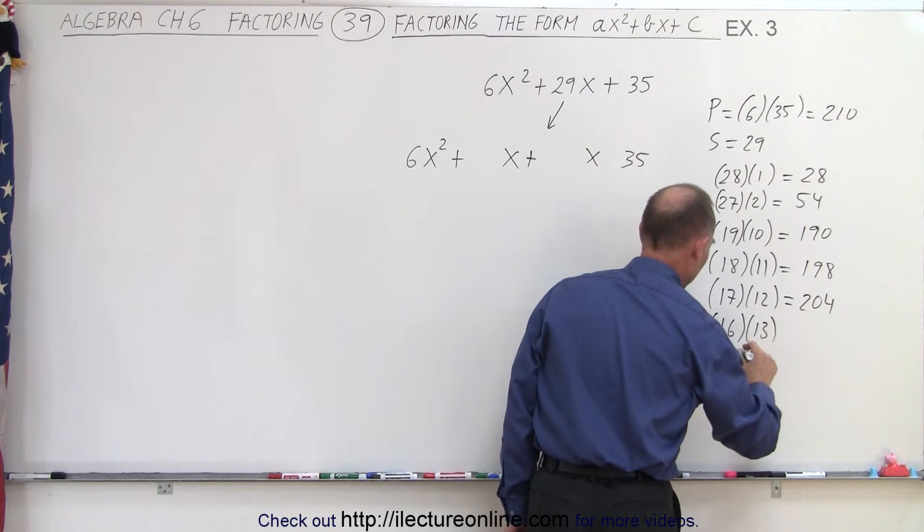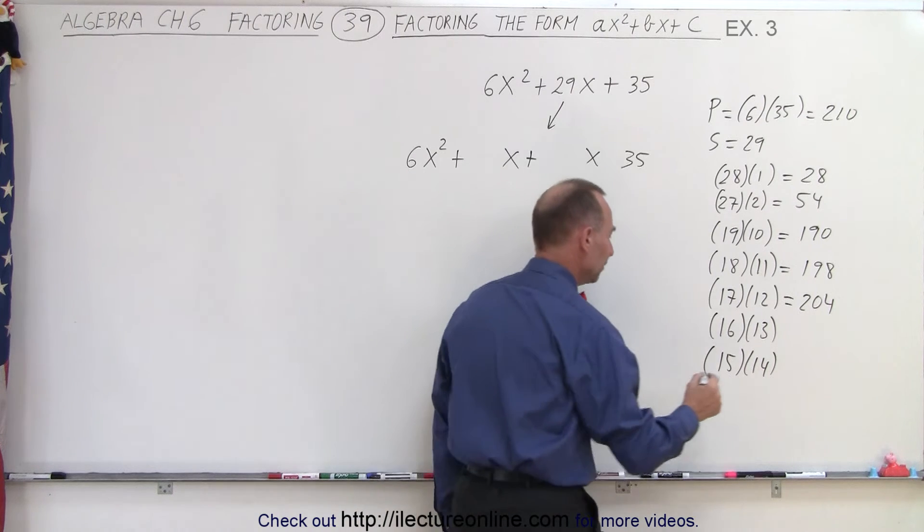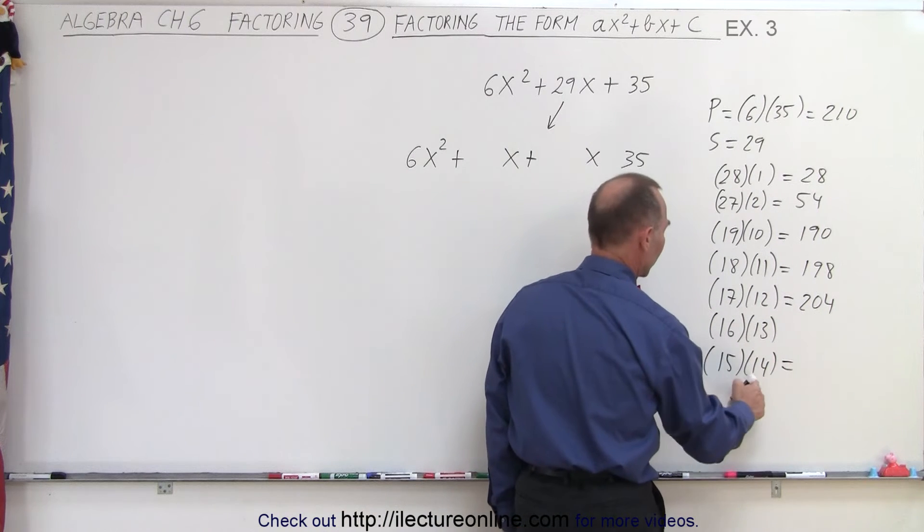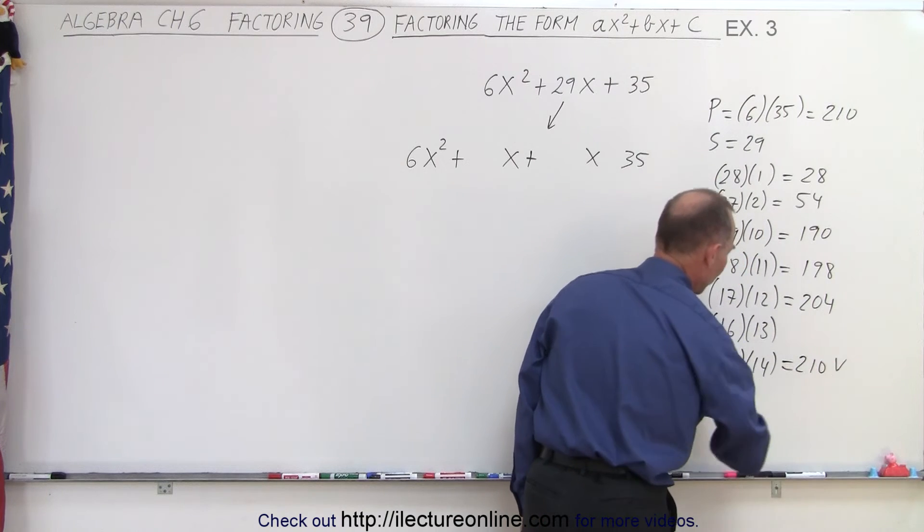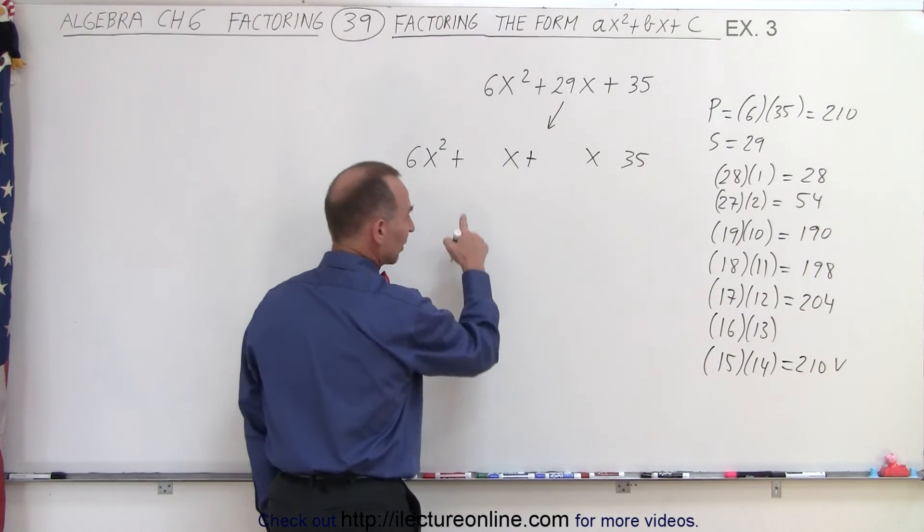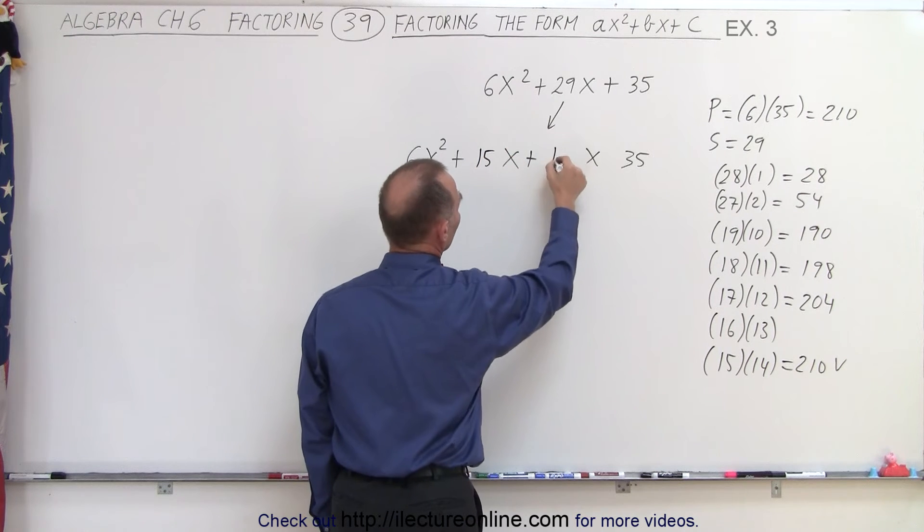How about 15 and 14? When I multiply 4 and 5, I get 20, which ends in 0, so that's probably the right one. Let's see: 140 and 70, yes indeed, 210. So I found the right combination, which means this can be written as 15X and 14X.